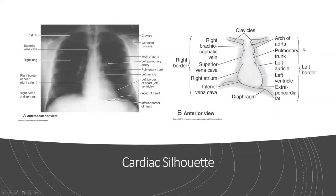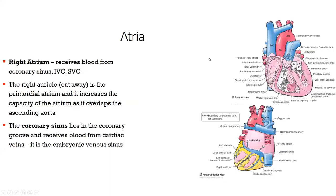Looking at the cardiovascular silhouette, the main high-yield piece is the apex of the heart. They'll refer to it and expect you to know it's located inferiorly toward the diaphragm. That's the one important gross anatomy point — make sure you know the apex is towards the bottom. I realize I'm flying through this, but there's so much anatomy, so I'm really trying to help you parse out what to focus on.